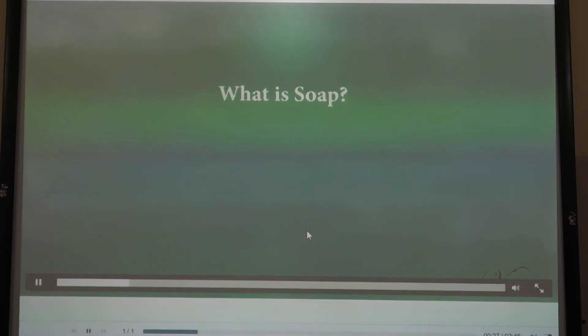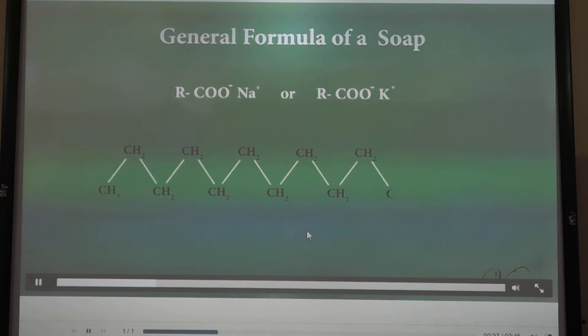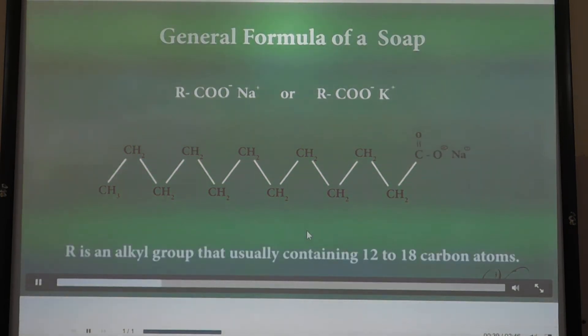What is soap? Soaps are made of sodium or potassium salts of long-chain fatty acids. The general formula of soap can be written as RCOONa, where R is an alkyl group that usually contains 12 to 18 carbon atoms.